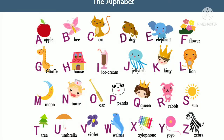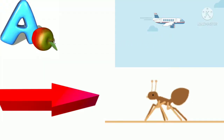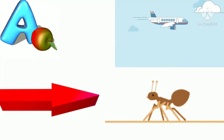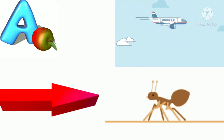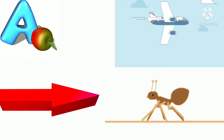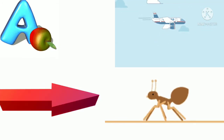Today we learn the English alphabet. Let's start. A for apple, A for aeroplane, A for arrow, A for aunt.